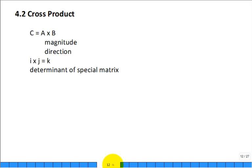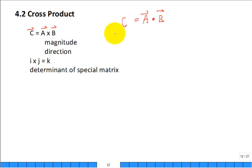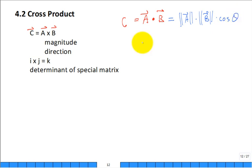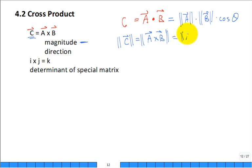Let's review the math of the cross product. If you have any vector A and any vector B in 3D, you can compute A cross B to get an answer C, which is a vector. Note that the dot product gives a scalar, but the cross product gives a vector. For the dot product, the magnitude was |A||B|cosθ. For the cross product, the magnitude of C equals |A||B|sinθ — using the sine of the angle between them.